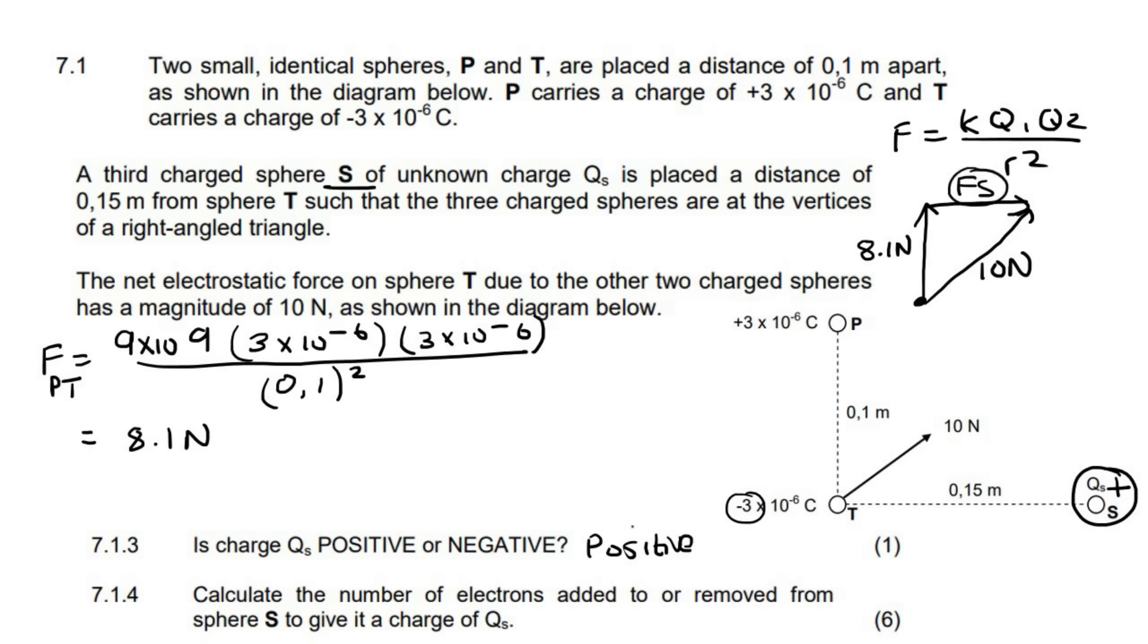So we could say that FS is gonna be the square root, because remember in Pythagoras you square, and you're gonna say 10 squared minus 8.1 squared. We're minusing because we already have the hypotenuse. And then if we go work this out now, if you don't like the way I'm doing Pythagoras, then just do it the way you would normally do it, and you will still get to the same answer. And that's gonna give us 5.864 newtons. So that would be the force of S.